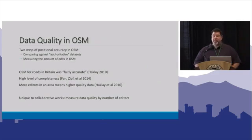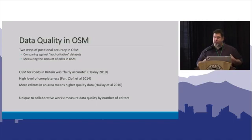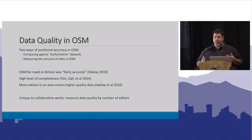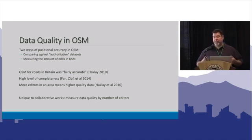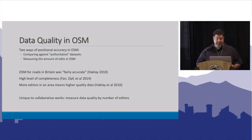When we talk about data quality in OpenStreetMap, the traditional approaches change quite a bit. Traditional methods use ground truthing or comparison against authoritative data sets. Research in OpenStreetMap has looked at accuracy relative to other data sets and on the ground, and also whether more changes in OpenStreetMap lead to more accurate data — generally yes, the more times a feature has been changed, the more accurate it is positionally. So the number of edits to a feature gives us an idea of how accurate that data might be.